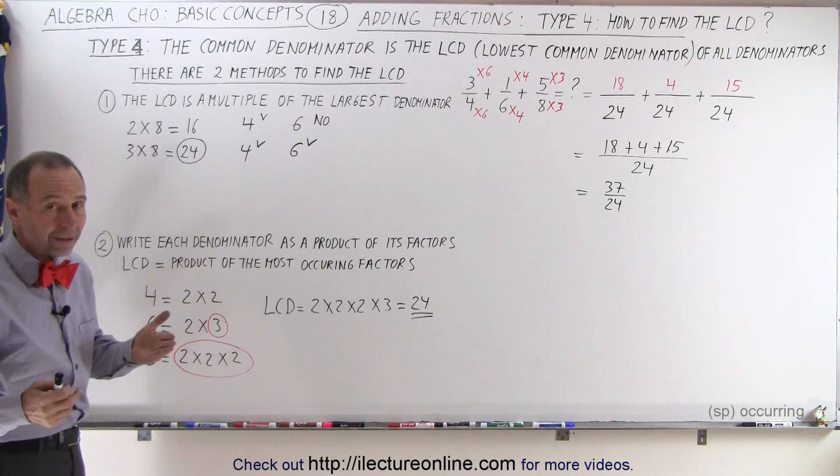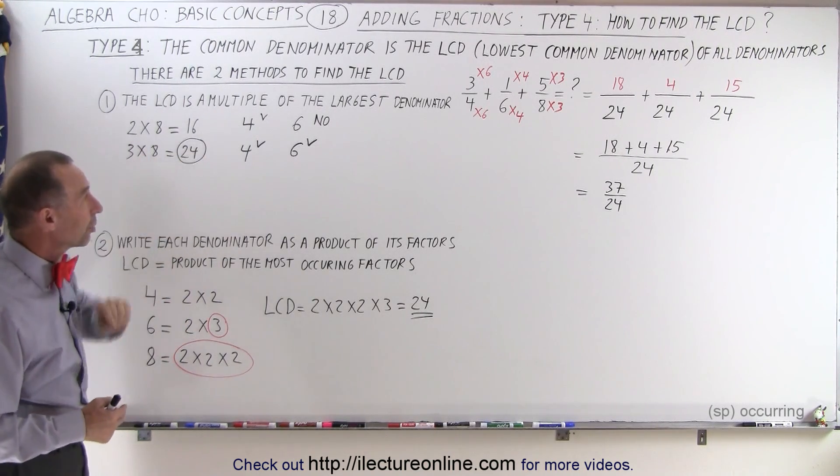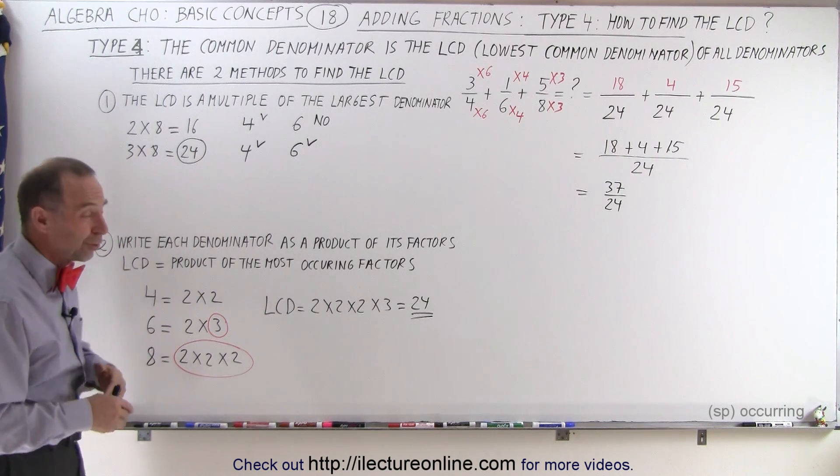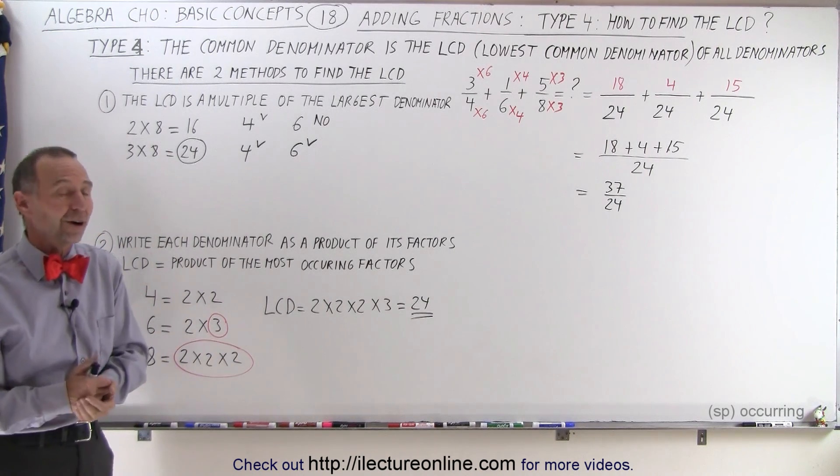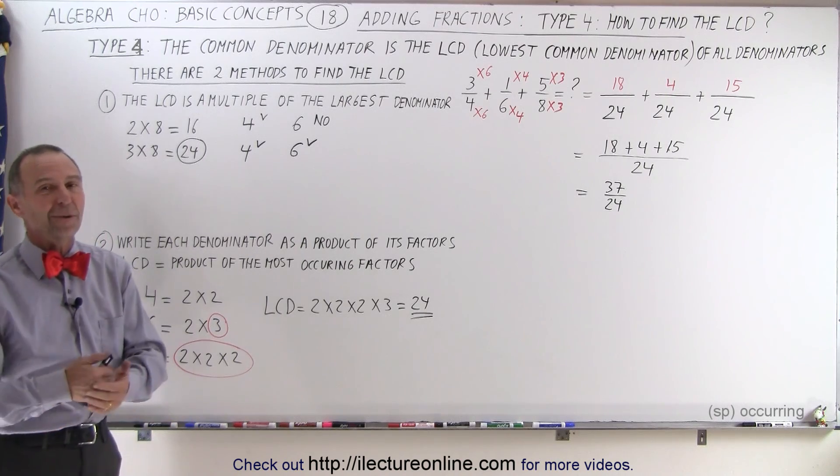Both methods are great. Whatever you prefer. This one typically works with smaller denominators. This one works no matter how big the denominators are. So this is kind of a fail-safe method. And that's how it's done.